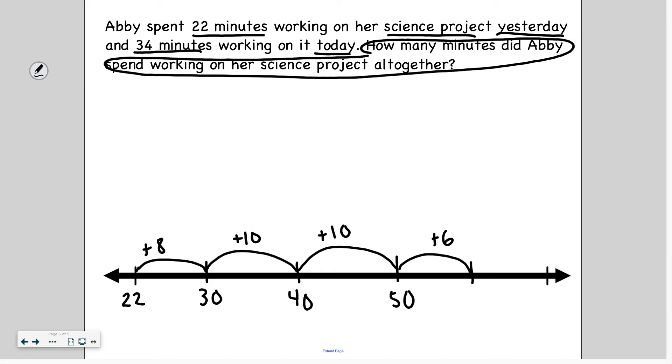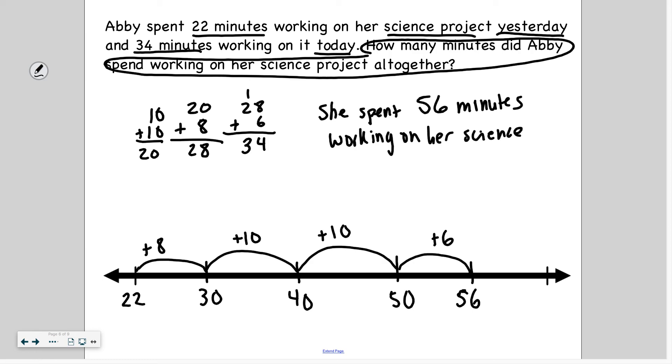So I get to 56. So I'm just going to make sure I added 34 minutes. So 10 plus 10 is 20. 20 plus the eight minutes that I added is 28. And then 28 plus six more minutes, six plus eight is 14, 34. So 34 minutes. So 22 plus 34 minutes is 56 minutes. She spent 56 minutes working on her science project.